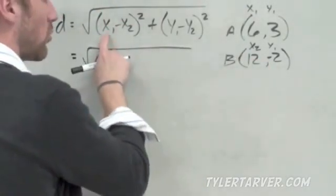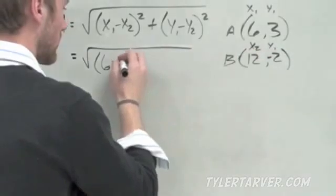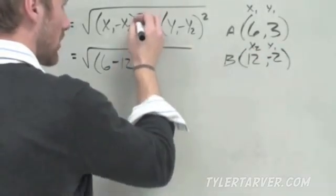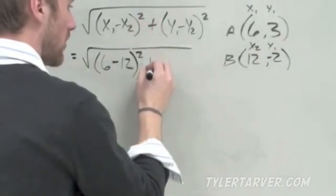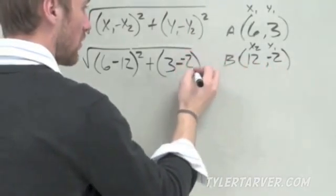Start with our x1, 6, minus sign x2 which is 12. Bring that squared. Plus sign, parentheses, y1 is 3, minus y2 which is negative 2 squared.